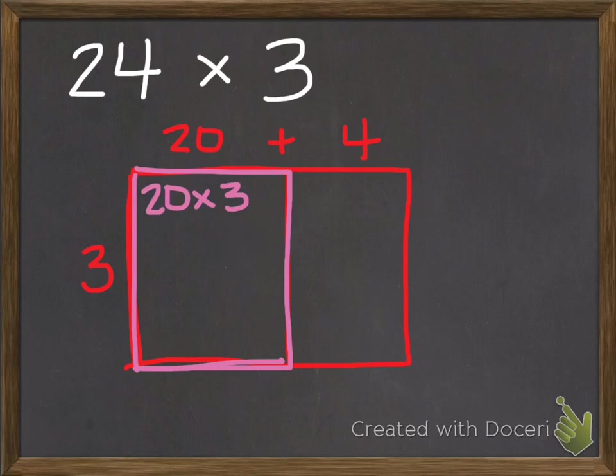I know I can easily say 3 times 2 is 6. And I can't forget to add this 0. So I know that the area of this rectangle is 60.